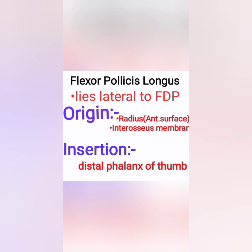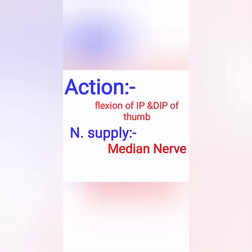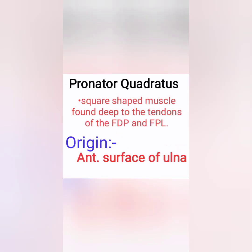The second deep muscle is flexor pollicis longus, which lies lateral to FDP — flexor digitorum profundus. FPL originates from the radius and interosseous membrane, and it inserts into the distal phalanx of the thumb. Its action is flexion of the IP and DIP joint of the thumb, and it is supplied by the median nerve.